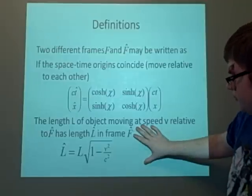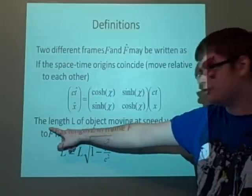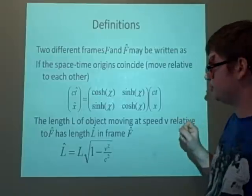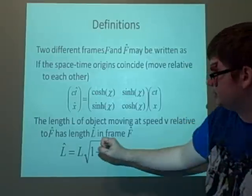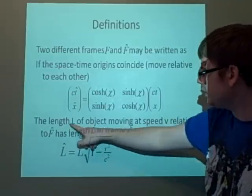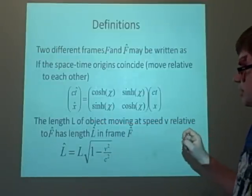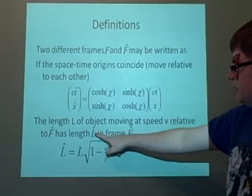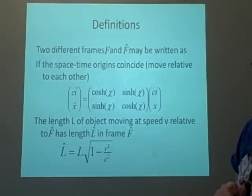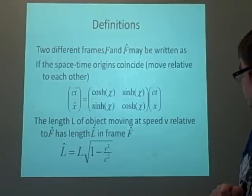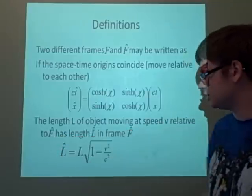What we're going to mainly look at is just if we're moving at the different frames, then the length of the object L moving at speed V relative to F-hat has length L-hat in frame F-hat. Well, that should be just a normal F, actually.